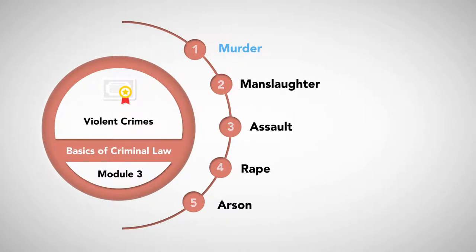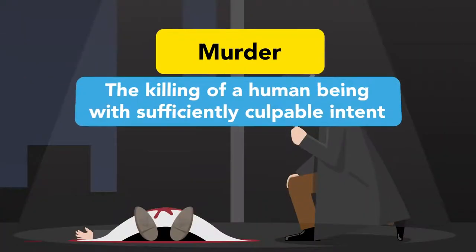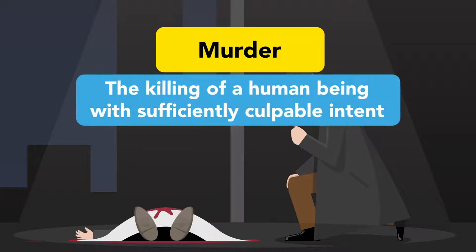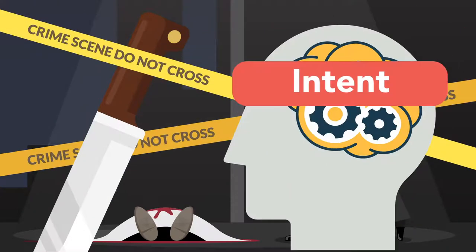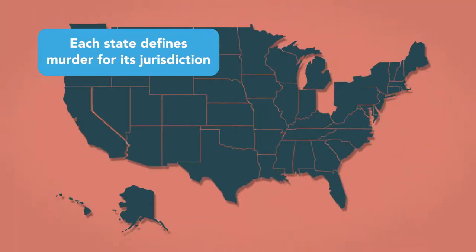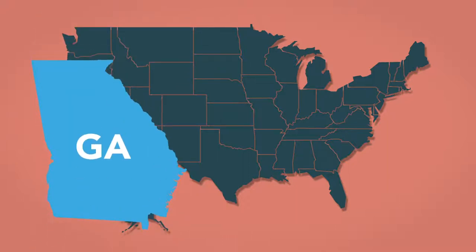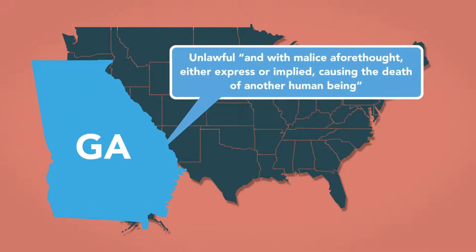Murder is the killing of another human being with sufficiently culpable intent. The level of intent determines the degree, or seriousness, of the crime. As with all crimes, each state defines murder for its jurisdiction. For example, Georgia defines murder as unlawful and with malice aforethought, either express or implied, causing the death of another human being.